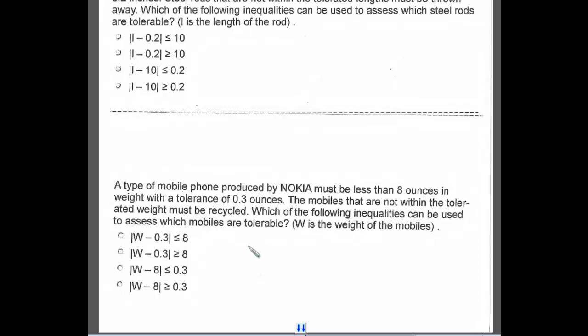Again, what we're looking for is the difference between what it is and what it should be. Let's look up in our problem and get the information that we need. In this problem, we have a tolerance of 0.3 ounces. That means that it must be less than or equal to 0.3 ounces.